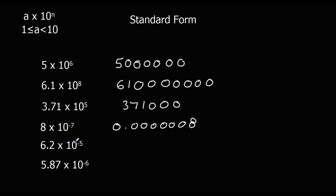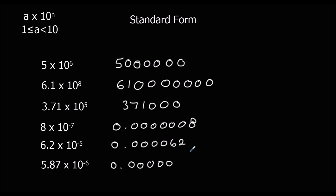6.2 times 10 to the power of minus 5: we get 0.000062 — 4 zeros then 62. And 5.87 times 10 to the power of minus 6: going back 1, 2, 3, 4, 5, 6 times gives 0.00000587.